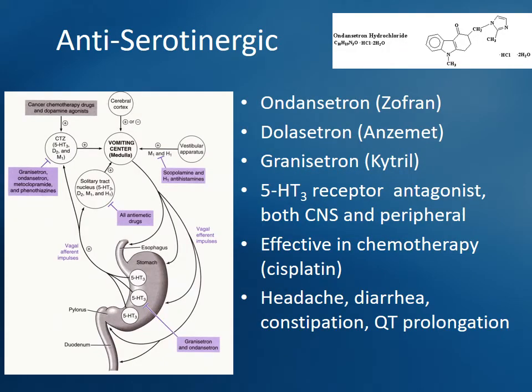These antiserotonergic drugs work both in the stomach and in the CNS to inhibit serotonin-3 receptors. Serotonin has about 15 different receptor subtypes, but these are specifically 5-HT3 receptor antagonists. That distinction is important — when we talk about migraines, you'll be looking at different types of serotonin receptors. Keep those straight, otherwise you could end up reaching for the wrong drug for that indication.